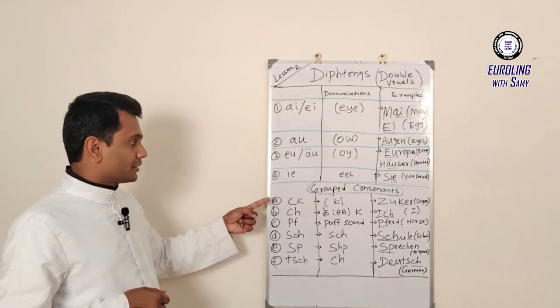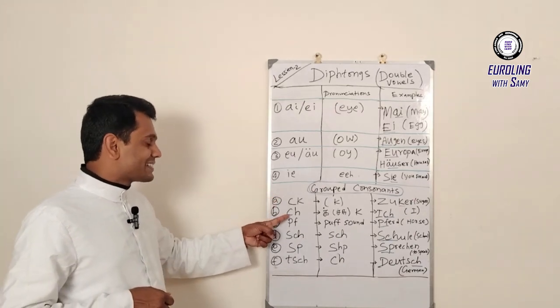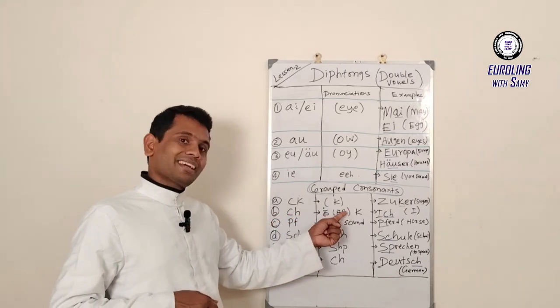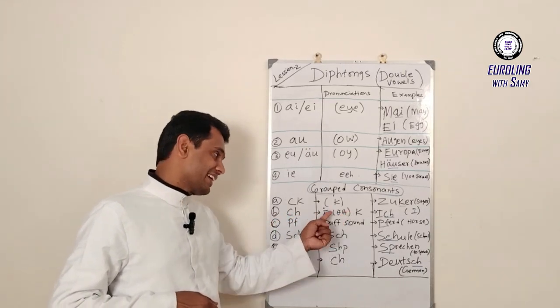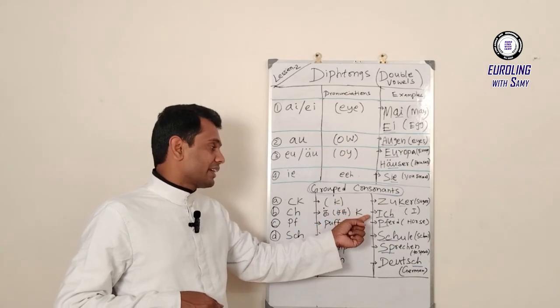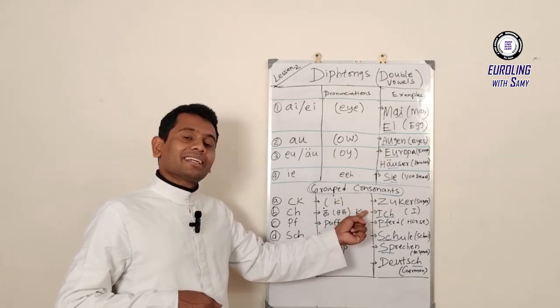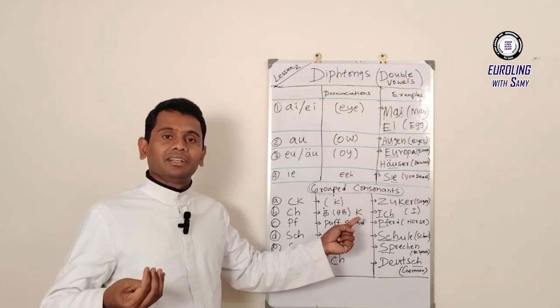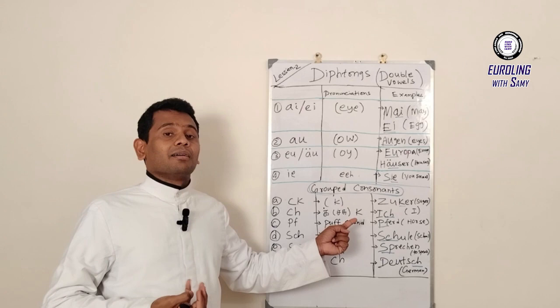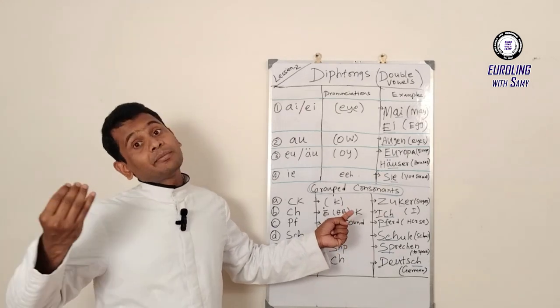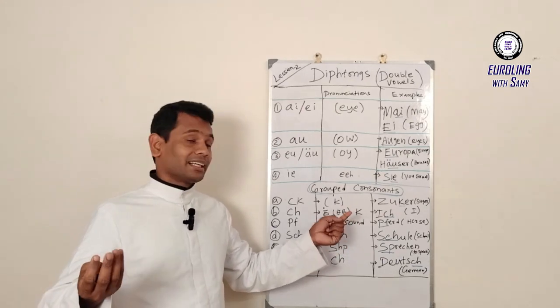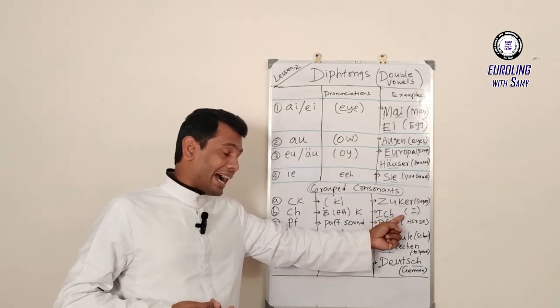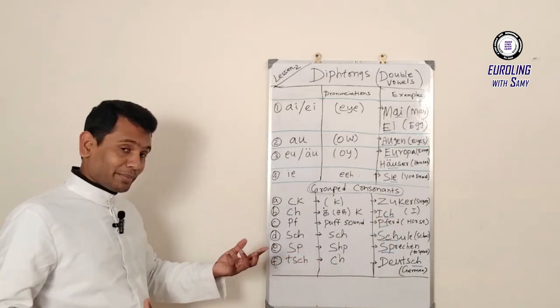Another example for grouped consonants, C-H. It is also pronounced as K-K-H. In some parts they call it as ICH, in some places they call it as ACH. For example, ICH BIN SAMI. ICH BIN SAMI means my name is Sami. Another example, ACHT. ACHT, that means eight.